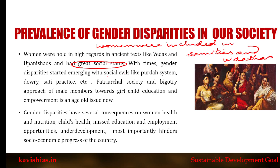Social evils like the parda system, the dowry system, and the sati practice emerged. Men were allowed to remarry but women were not. These kinds of discrimination took place in society, and this male-dominated patriarchal society is the most important and detrimental reason why girl education and empowerment has been an age-old issue.